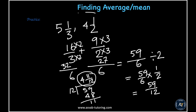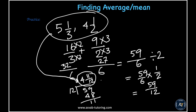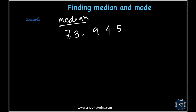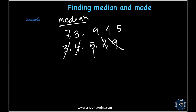Next topic: median and mode. The median is the middle value of a series. For example, given 7, 3, 9, 4, 5 — first arrange in ascending order: 3, 4, 5, 7, 9. Then cross out from the first and last inward. The middle value remaining is 5, which is the median.